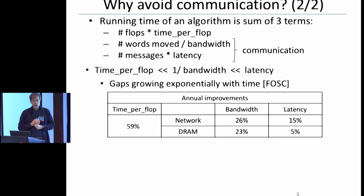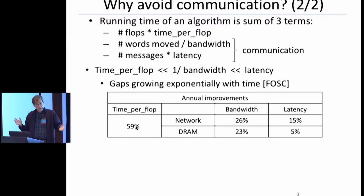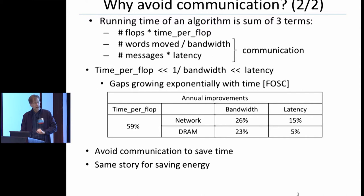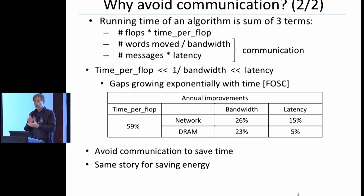The time per flop is much less than to send a word, which is much less than the latency, and they're growing apart exponentially over time. This data is a little old, but Moore's Law and end of Dennard scaling meant that multi-core is now making time per flop improve every year, while everything else improves much more slowly. So even if your algorithm is not dominated by communication this year, it may be next year or the year after. We want to avoid communication to save time — and the same story holds for energy, in joules per flop, joules per word moved, or joules per message.